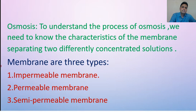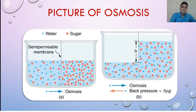Now let's look at the picture of osmosis. There are two solutions — one is water and another is sugar — and there is a semipermeable membrane between them. Impermeable membrane: the membrane through which molecules of both solute and solvent cannot pass. To make a solution you need solute and solvent.